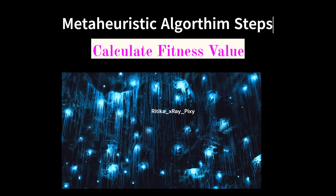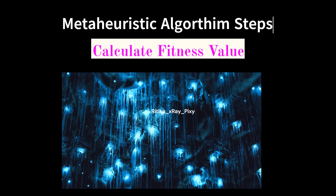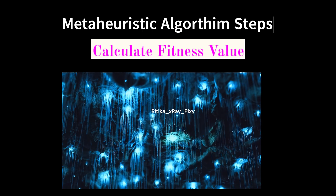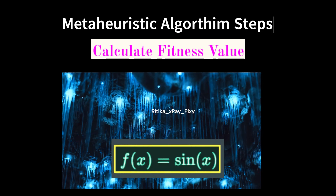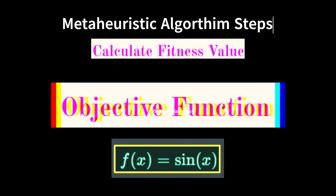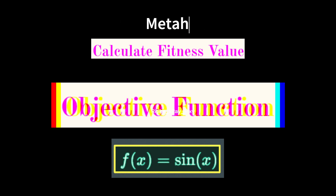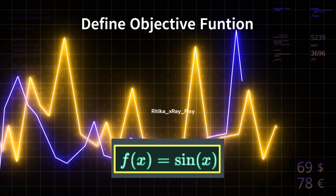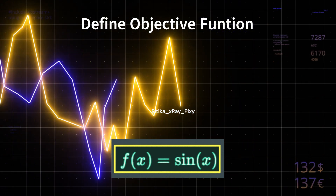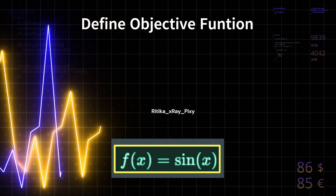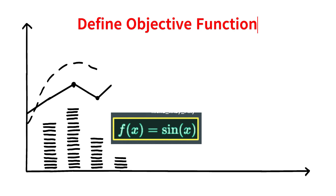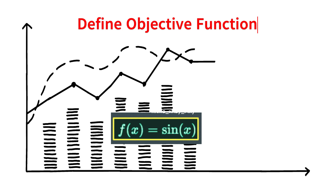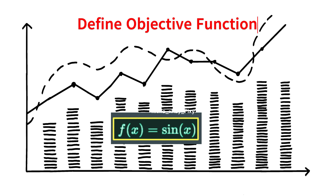In this population, we calculate the fitness value for each individual. This fitness value is used to determine the solution quality for the given optimization problem. Each individual's fitness value is calculated based on an objective function or evaluation metric that reflects the performance or quality of the solution with respect to the problem being solved. Using this objective function, we can calculate the fitness value for each individual in the current population.